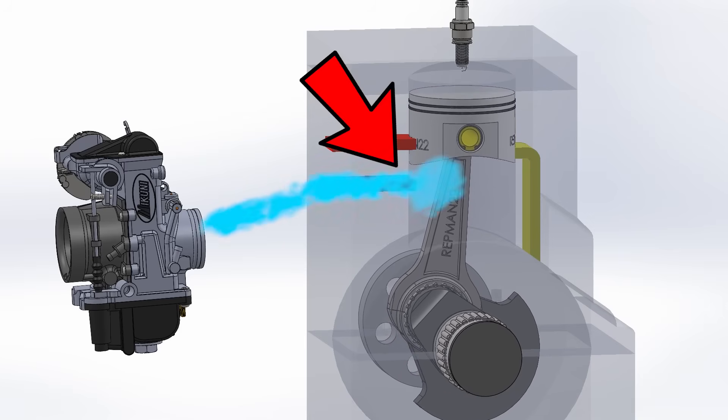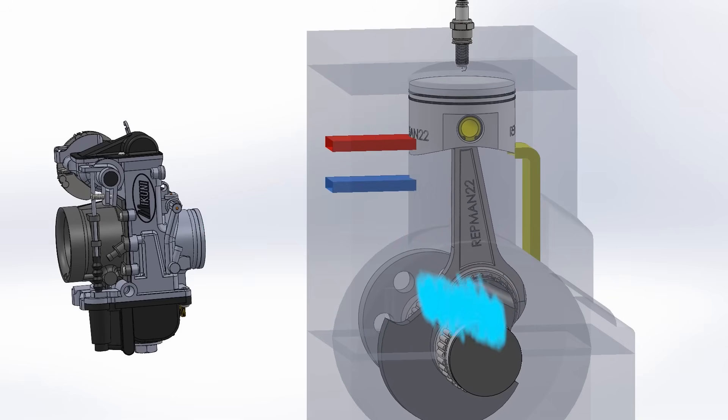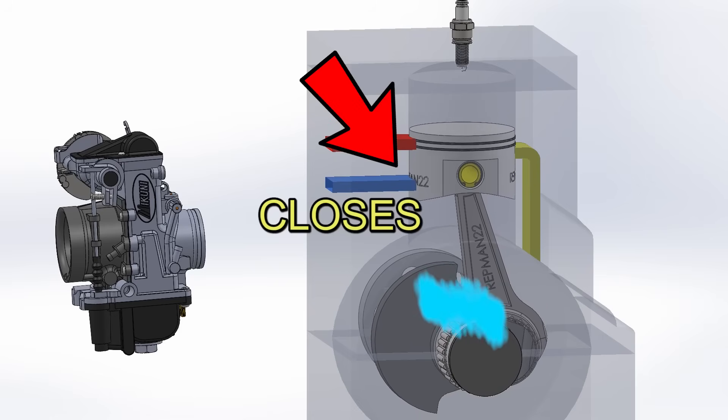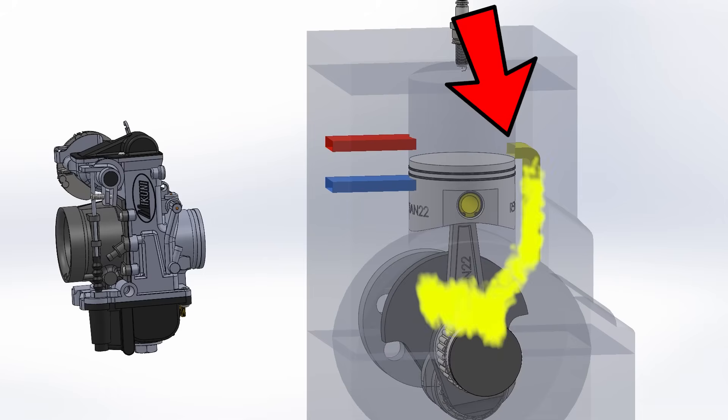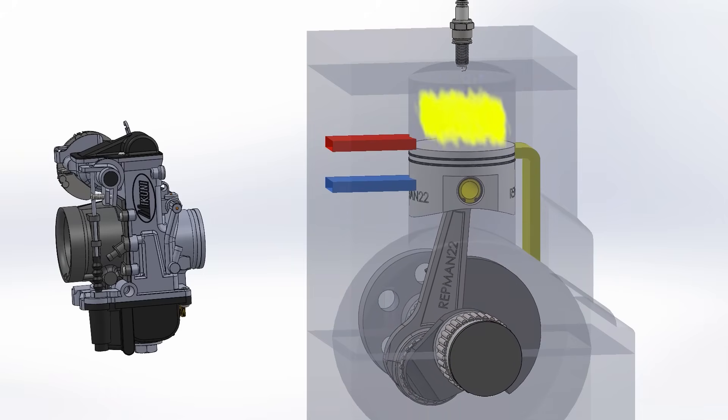First, when the piston goes up, it uncovers the intake port and at the same time creates a vacuum, forcing the mixture to enter the crankcase. Then the piston goes down, compressing the crankcase. At the same time, it stops blocking the transfer passages. The mixture now flows rapidly into the cylinder.